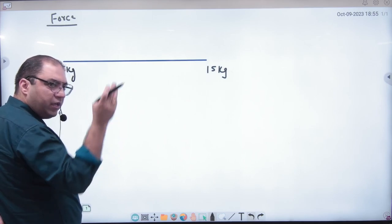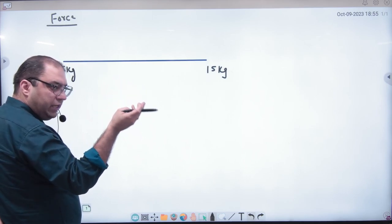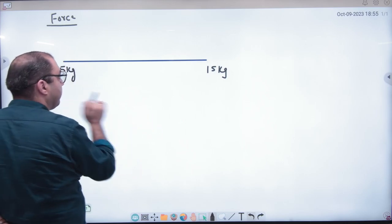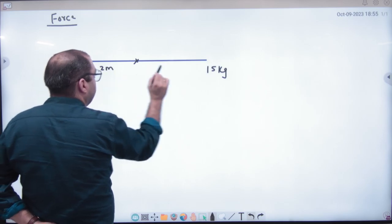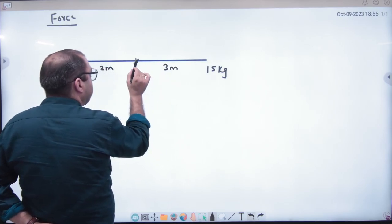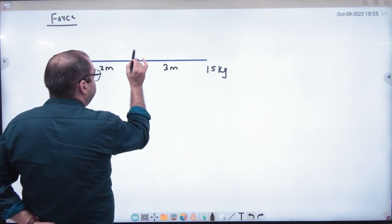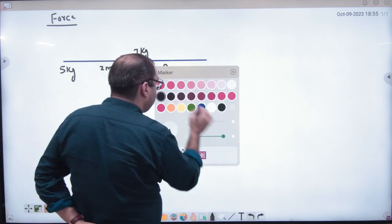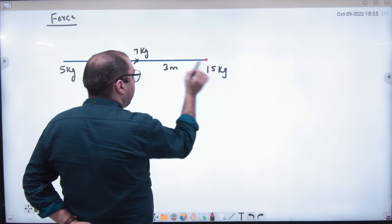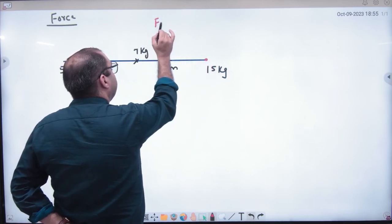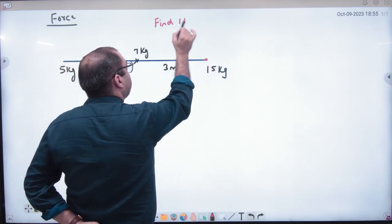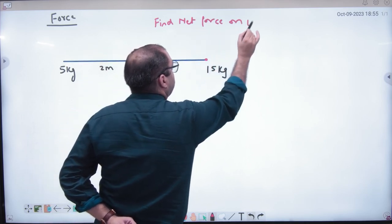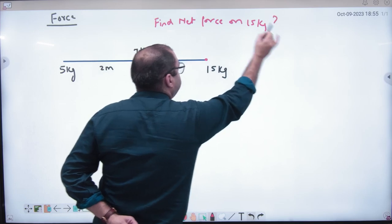We will do four things: Force, E, U and V. Suppose this distance is two meters, this is three meters. I have another mass given here, think of seven kg. The first question is this type. Let's take net force. Find net force on 15 kg. What will net force on 15 kg? This is the question.